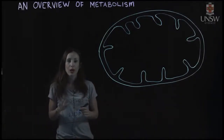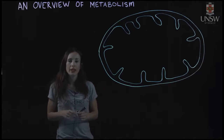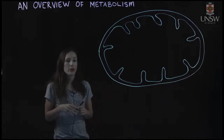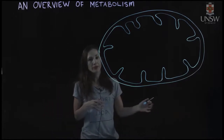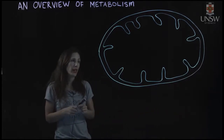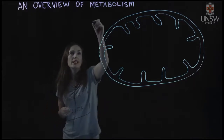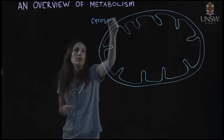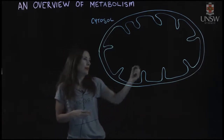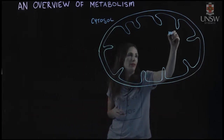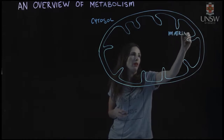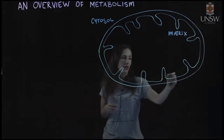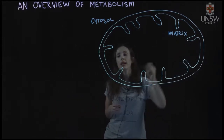I'm going to go through an overview of metabolism, looking at glucose from when it is oxidized to producing ATP. We have here a mitochondria. Some of that reaction starts outside in the cytosol of eukaryotic cells, some occurs in the matrix, and oxidative phosphorylation occurs on the inner mitochondrial membrane.